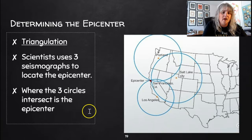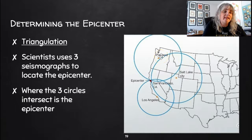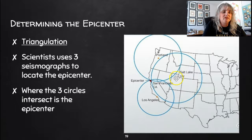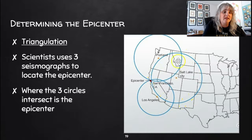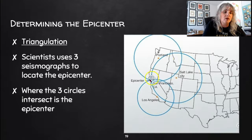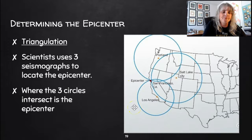Scientists use a thing called triangulation to figure out where the epicenter of an earthquake is. Let's say we've got seismographs in Los Angeles, Salt Lake City, and Portland, and they picked up seismic waves of an earthquake. Based on those seismic waves, they can tell how far away from the seismograph the earthquake was. Because of the strength of the seismic waves, they can make a circle — for example, the seismograph in Salt Lake City can tell how many miles away it was, and they draw a circle. One seismograph is not enough because the epicenter can be anywhere on that circle. With two seismographs the circles could intersect in two places, so that's why they need a third — where those three circles intersect is the epicenter of the earthquake. That's called triangulation — think tricycle, triangle, three.